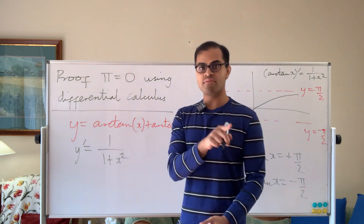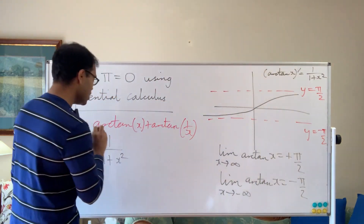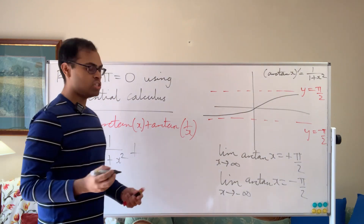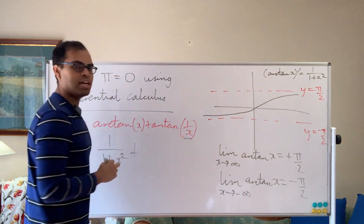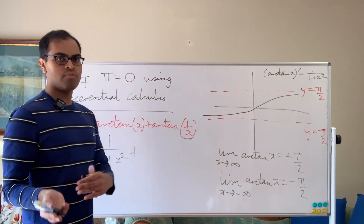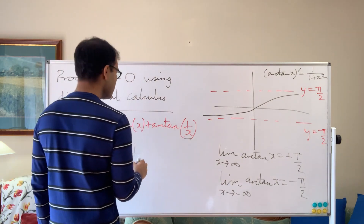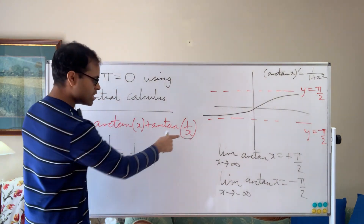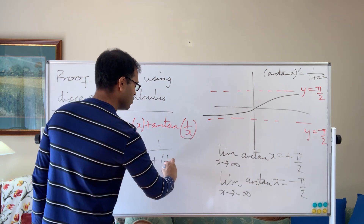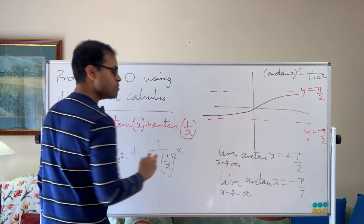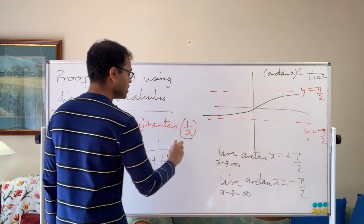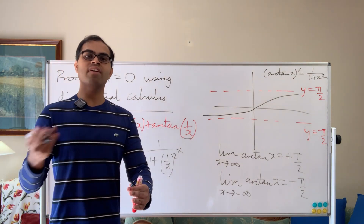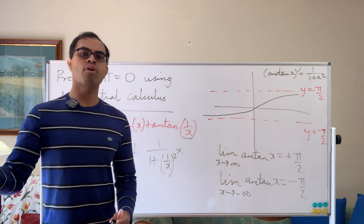Plus the derivative of arctan of 1 over x, using the chain rule: first differentiate arctan, then differentiate 1 over x and multiply. The derivative of arctan with argument 1 over x gives 1 over 1 plus (1/x) squared. Then we multiply by the derivative of 1 over x, which using the power rule is negative 1 over x squared.